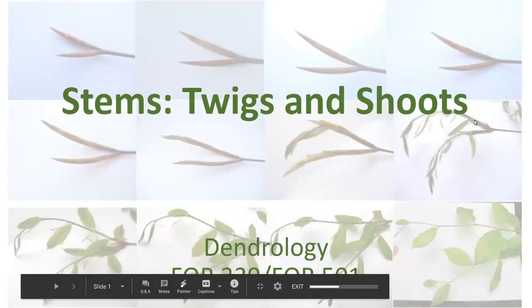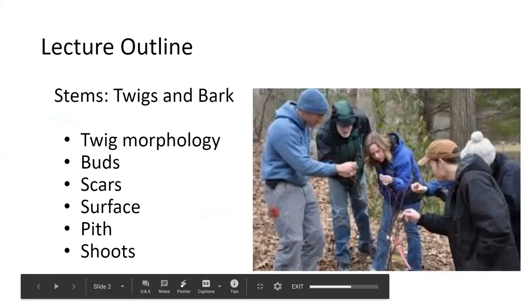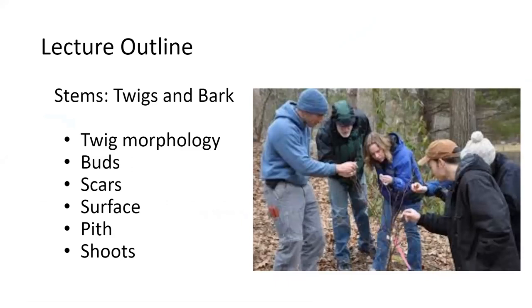Hey folks. We're going to continue our discussion of twigs and shoots and specifically we'll learn some terms for looking at useful characters that can help with identification. The backdrop for this slide is a series of photos taken of a beach at the very early part of spring. These terms can be really useful, especially when you can see people crowding around a stick bundled up for winter — this is especially useful in the wintertime.